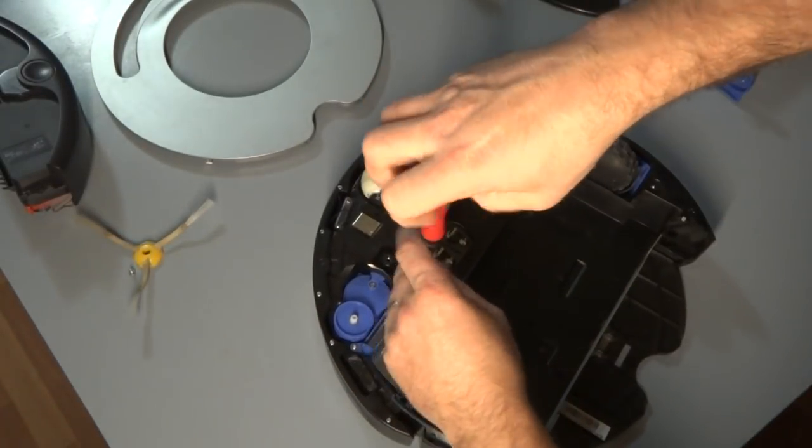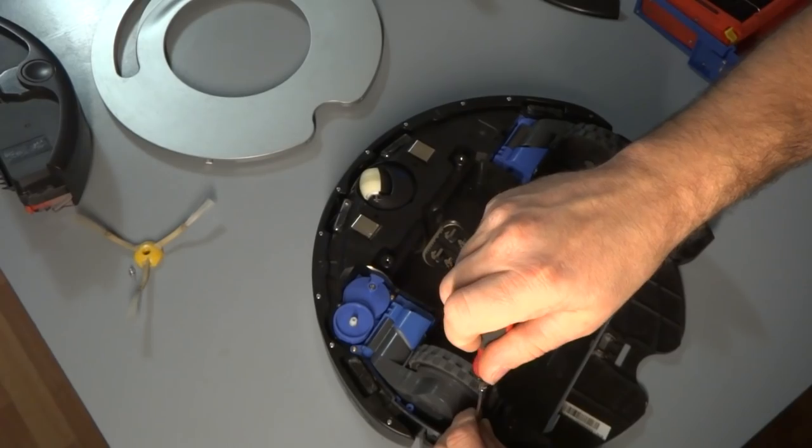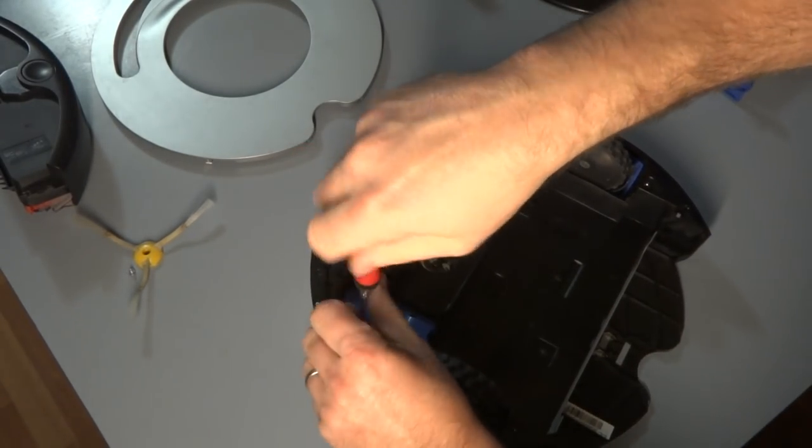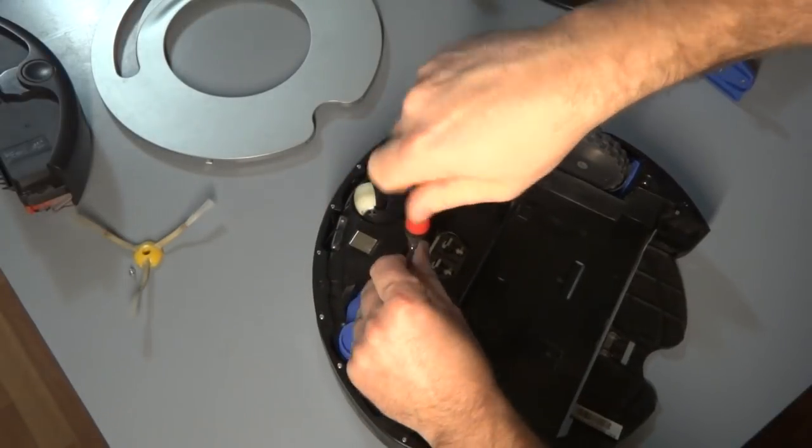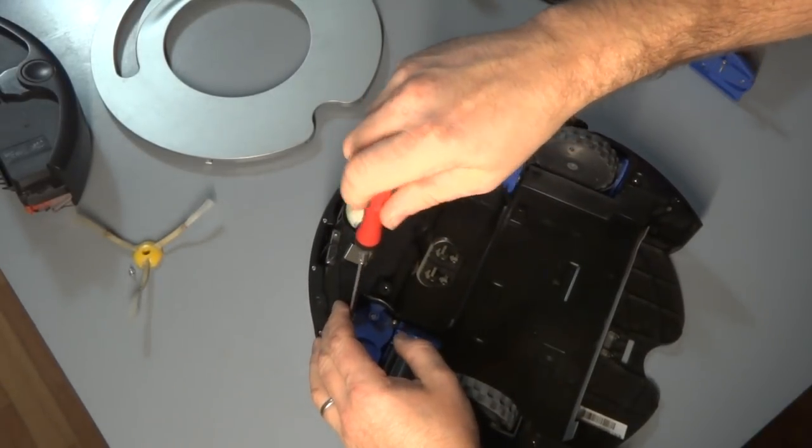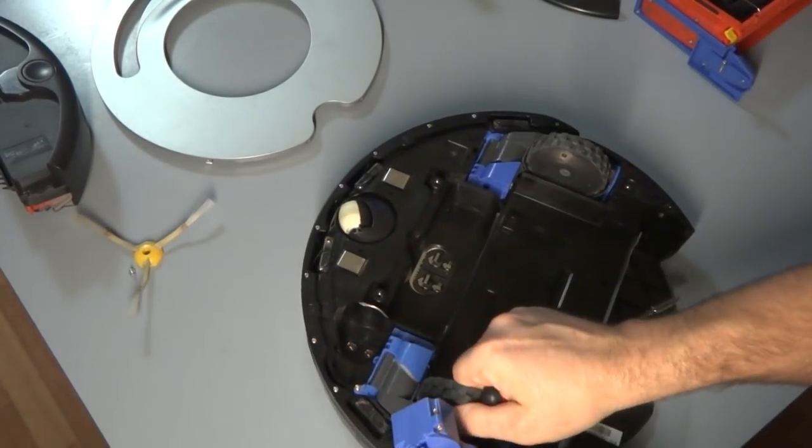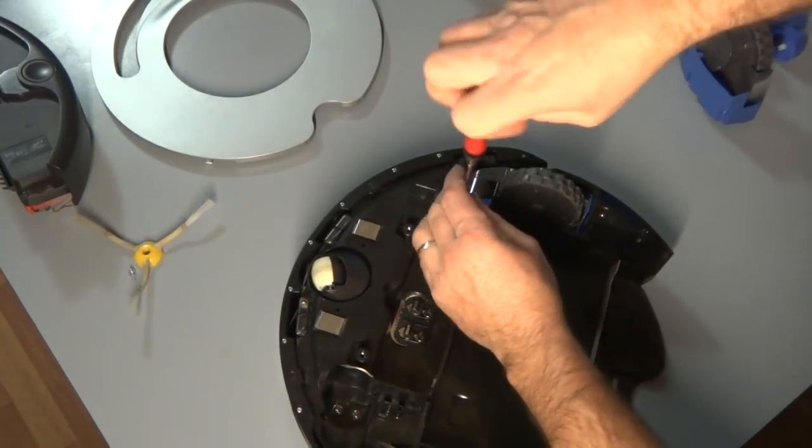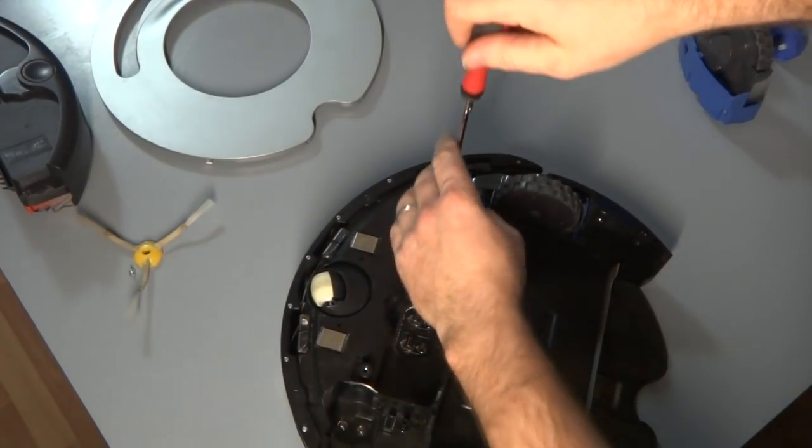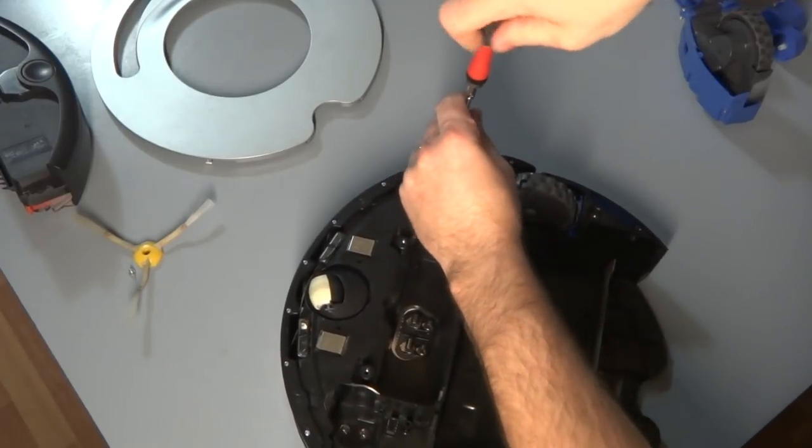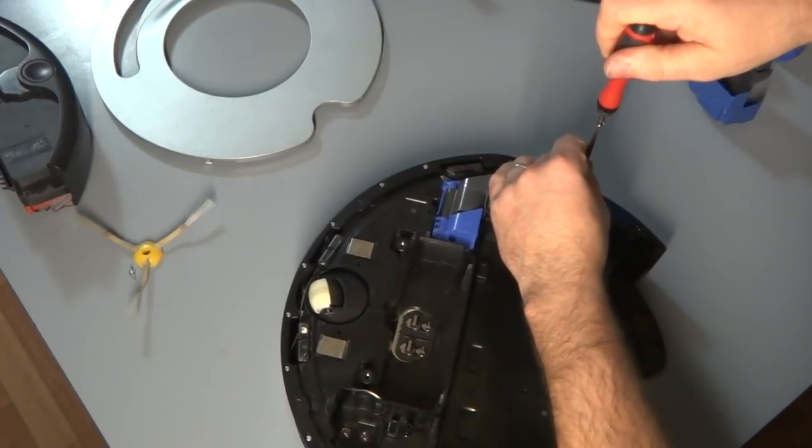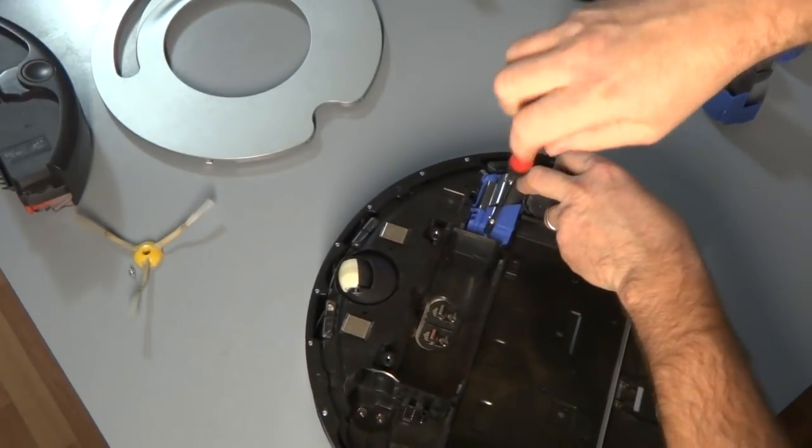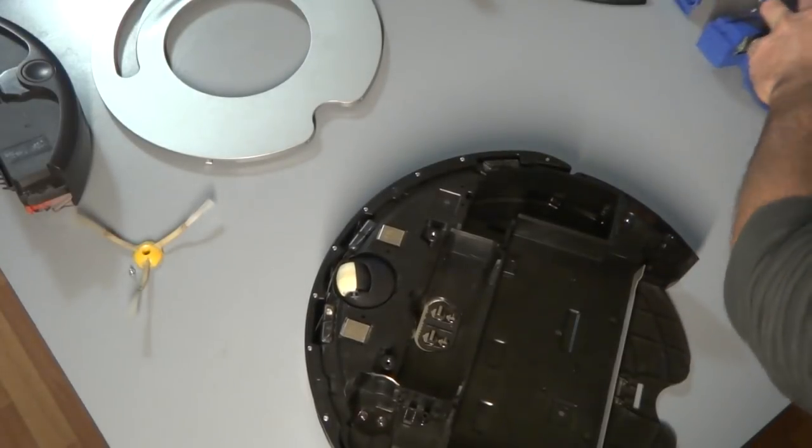So go ahead and remove the clean head module. The wheel modules, left and right. And the side brush motor module. Go ahead and remove all those. I like to remove these parts because it puts less stress on the motherboard when you're reinstalling the motherboard. And that makes it much easier to work with. Since it's lighter and the wheels don't end up turning on you every time you want to move it around.